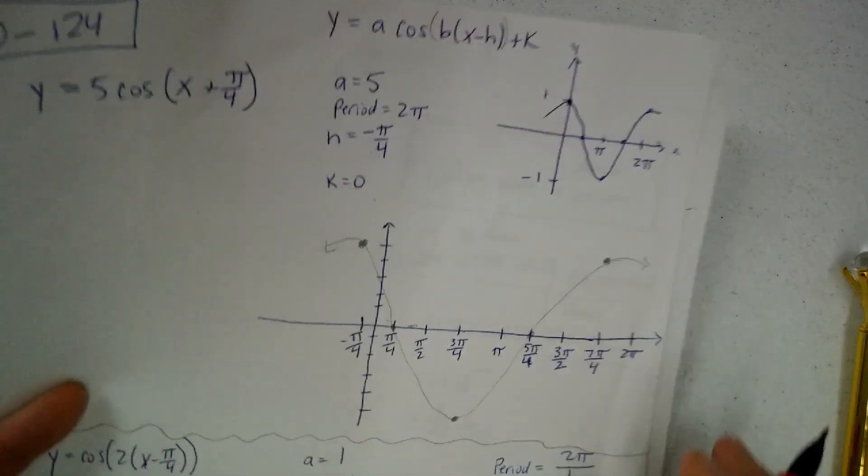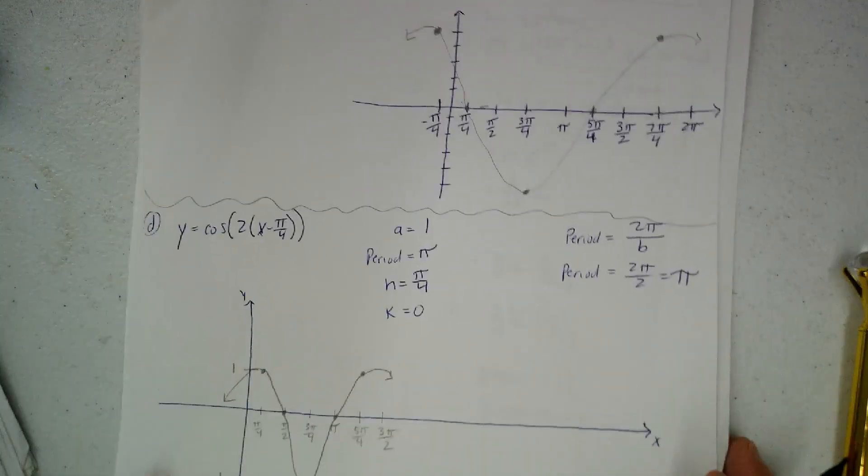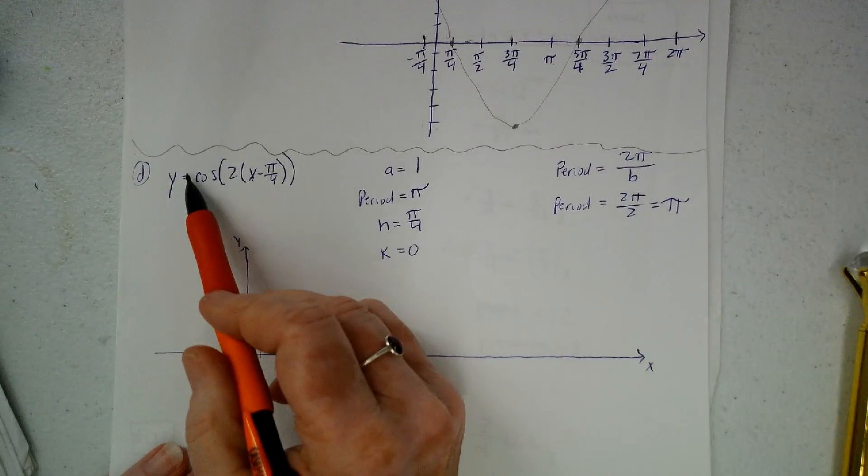And then I just kind of put some arrows on it. Okay, so that was letter C. And then here's letter D. Letter D, A is 1, because I look right here to find it.